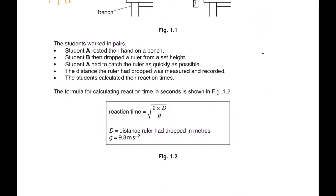The formula is provided to you and in this formula if you compute these values you get the reaction time. The students worked in pairs. Student A rested their hand on a bench. Student B then dropped the ruler from a set height. Student A had to catch the ruler as quickly as possible. The distance the ruler dropped was measured and recorded. The student calculated the reaction time using the formula where g value was 9.8 meters per second squared.